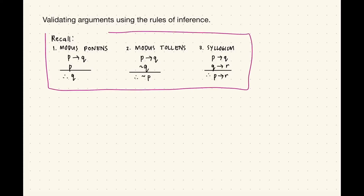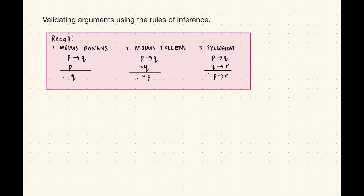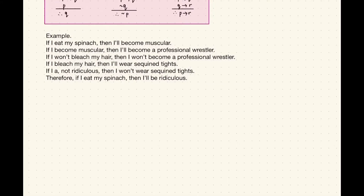We'll use some of these in this example. The argument is: if I eat my spinach then I'll become muscular; if I become muscular then I'll become a professional wrestler; if I won't bleach my hair then I won't become a professional wrestler; if I bleach my hair then I'll wear sequin tights; if I am not ridiculous then I won't wear sequin tights; therefore, if I eat my spinach then I'll be ridiculous.